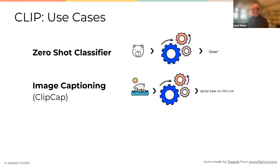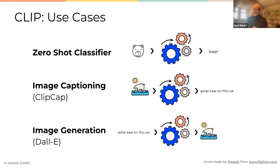Another use case is image captioning, where the model takes an image and comes up with its own description — it writes a sentence describing the image. This is an extension of CLIP, not possible with CLIP alone. An example of this is CLIPCap. And that's also possible in reverse — we can use text to tell the model what it should draw, and the model generates its own image, like an artist. This is called DALL-E, which was also published by OpenAI.